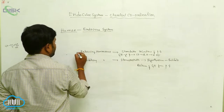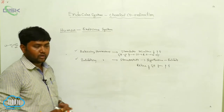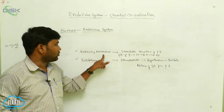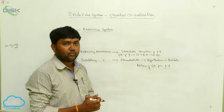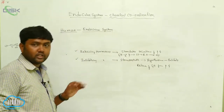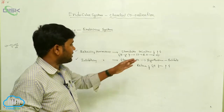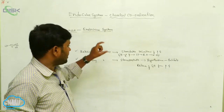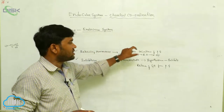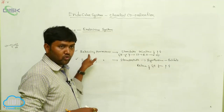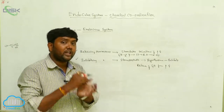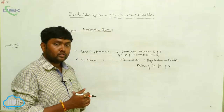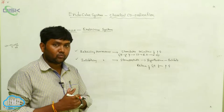There are two types of neurohormones: releasing hormones and inhibitory hormones. The releasing hormones stimulate the secretions of the pituitary gland. For example, growth hormone is released by the pituitary gland, which is stimulated by the releasing hormone secreted by the hypothalamus.